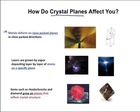For example, metals deform on close-packed planes in close-packed directions, which is useful for industry in making things. Lasers are grown by vapor depositing layer by layer of atoms on a specific plane. My personal favorite is that gems grow on planes that reflect the crystal structure, so all of our shiny gemstones reflect crystal structure. That's why crystal planes are important.